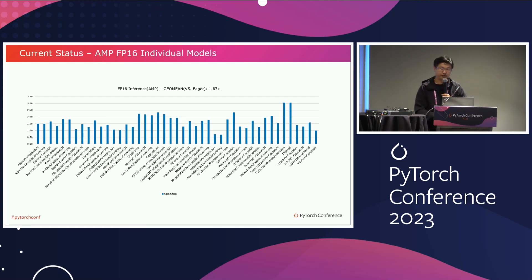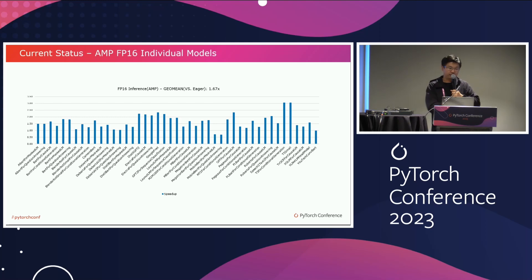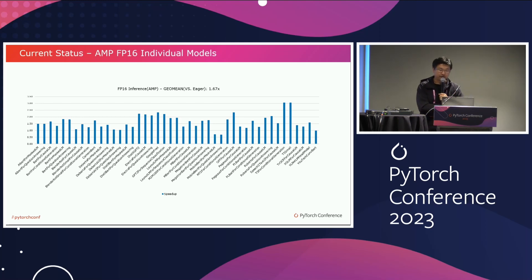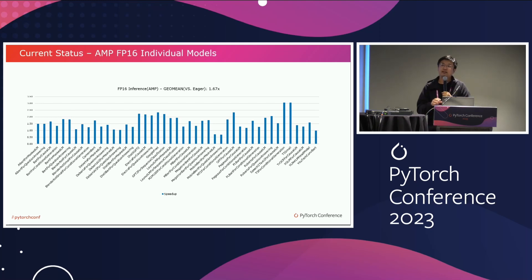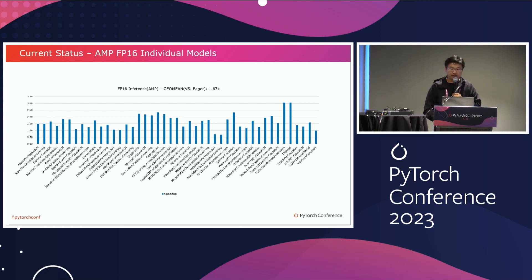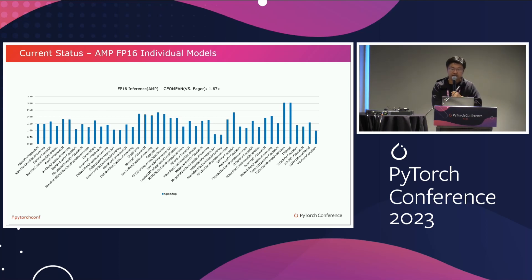This page shows the individual models for auto-mixed precision FP16 inference. Most of the models are better than eager mode. The outlier portion is better than in training mode — the outlier portion here is about 10%. We are continuously optimizing these models.